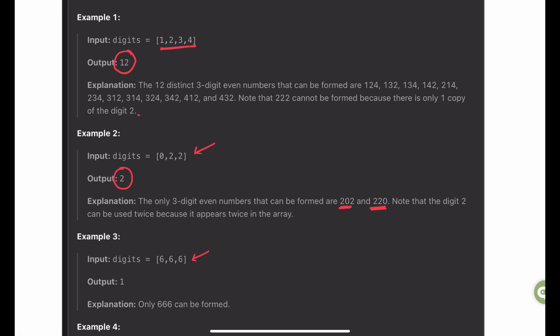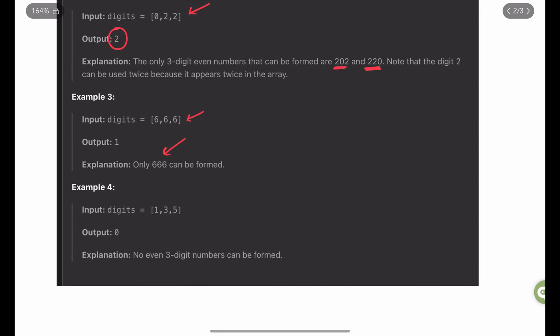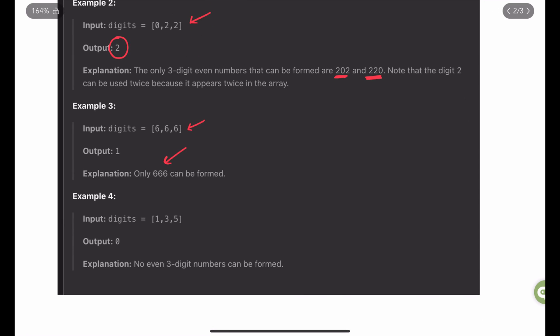Similarly, with example number 3, with 3 6s as the input, we can only make one 3-digit unique number. And in example number 4, we are given 1, 3, and 5. As all of the numbers are odd, we cannot make a 3-digit even number out of it. So the output is 0.